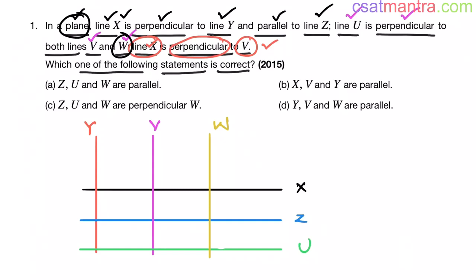Let us go through each option. z, u and w are parallel. z and u are parallel, but w is perpendicular. So this option is incorrect.